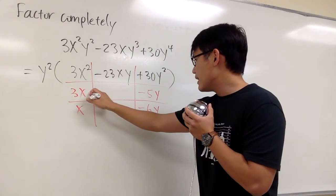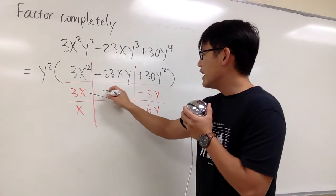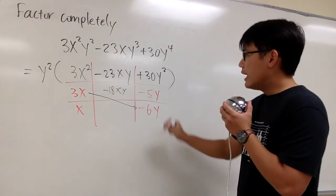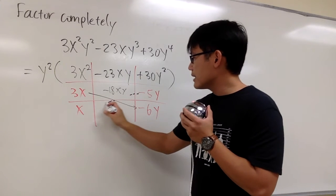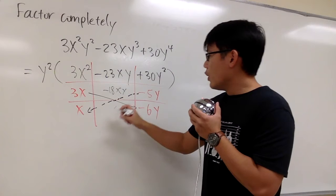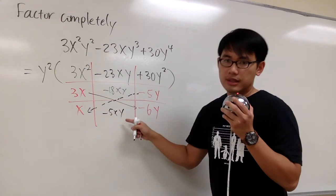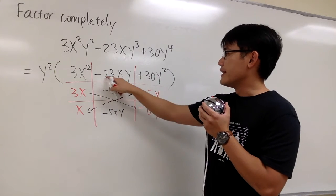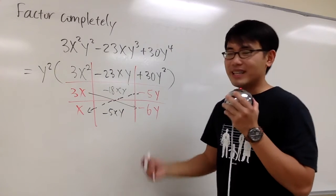You see, 3x times negative 6y, that will give us negative 18xy. And then if we do, negative 5y times x, take this times that, we get negative 5xy. And these two together, when we combine like terms, negative 18 minus 5, that will give us negative 23. And then they are both the xy term. So you know this is correct.